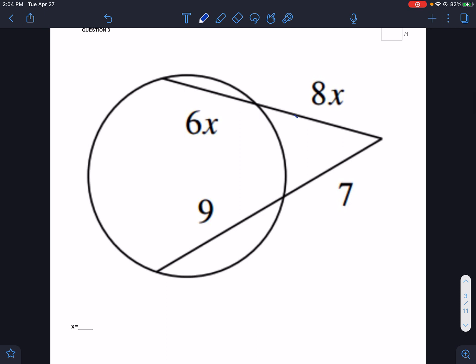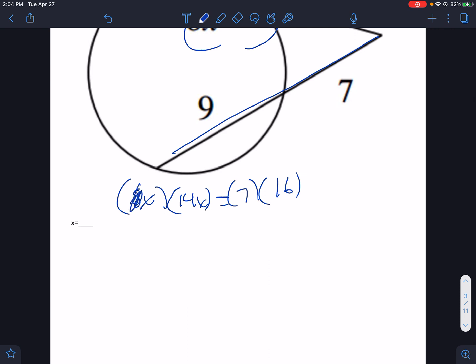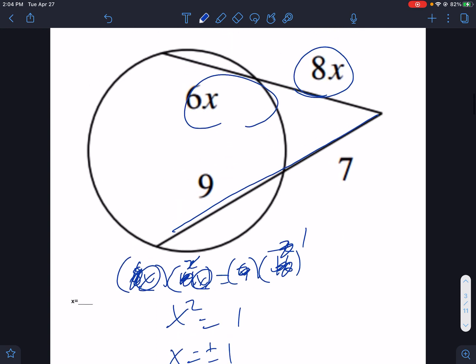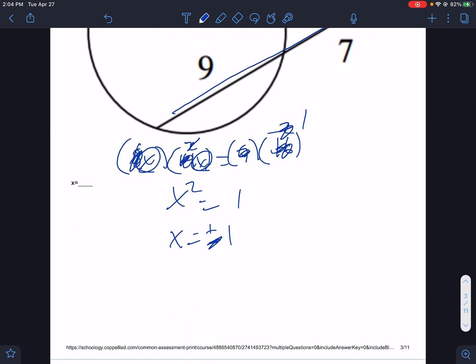Secants, outside times total, that would be 8x on the outside. The whole thing would be 8x plus 6x, which is 14x, equals outside 7 times the whole thing would be 16. I like to divide first. Divide both sides by 8, this would be 2. Divide both sides by 7, this would be 2. Divide both sides by 2, this would be x squared equals 1. We have x times x equals 1. So x equals plus or minus 1, but you can't plug in negative 1 would make that negative. So it's just the positive 1.